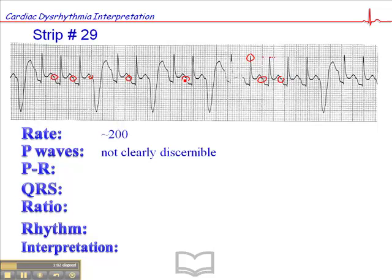But keep in mind, this is a resting adult patient who cannot possibly mount a tachycardia of 200 beats per minute at rest. So this is clearly a dysrhythmia.